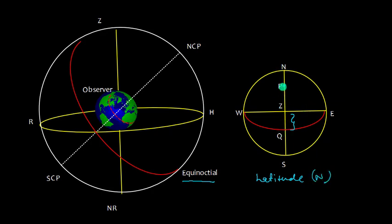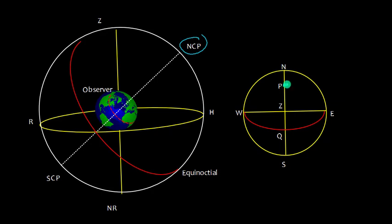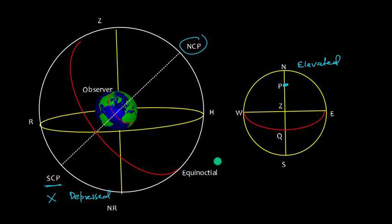If you see here, within the rational horizon, the North Celestial Pole is visible, so this North pole is called the elevated pole. Here, the South Celestial Pole is not visible, so the South Celestial Pole is the depressed pole. In this diagram the North pole is the elevated pole and the South pole is the depressed pole, but in other configurations the South Celestial Pole can become the elevated pole and vice versa.